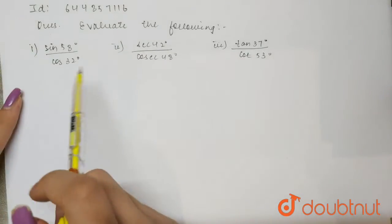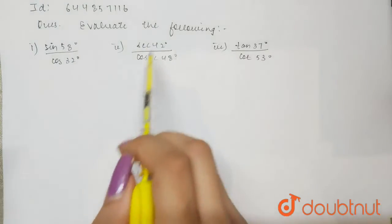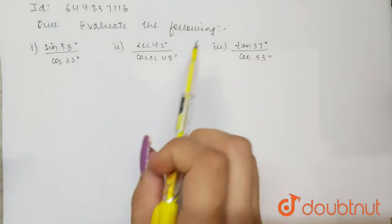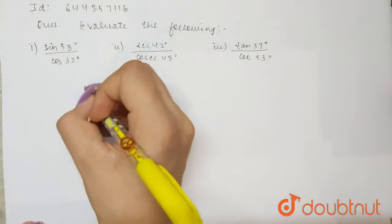sine 58° by cosine 32°, secant 42° by cosecant 48°, and tan 37° by cotangent 53°. So first of all,